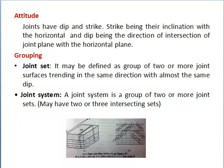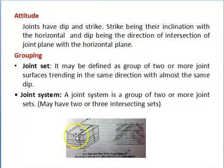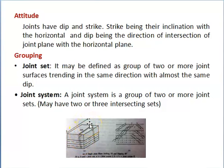Like faults, joints have dip and strike — strike being their inclination with the horizontal, and dip being the direction of intersection of the joint plane with the horizontal plane. This diagram shows a single joint plane striking north-south and dipping 80 degrees. This angle between the horizontal plane and the joint plane is called the dip of the joint.